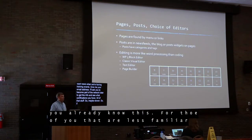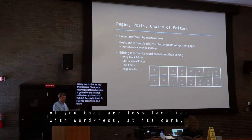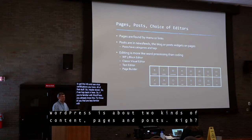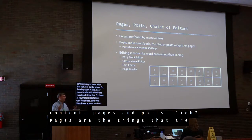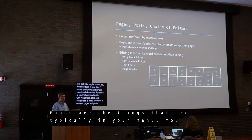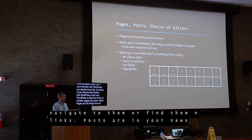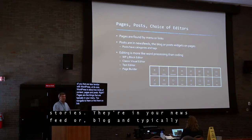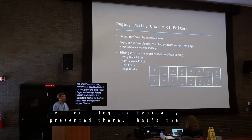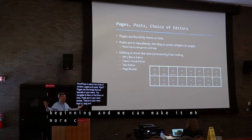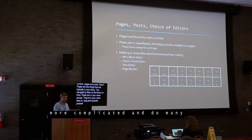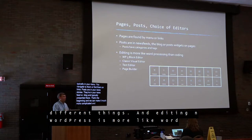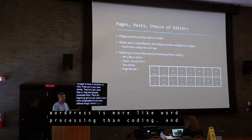If you're familiar with WordPress, you already know this. At its core, WordPress is about two kinds of content: pages and posts. Pages are the things typically in your menu — you navigate to them or find them from links. Posts are your news stories, in your news feed or blog. From there we can certainly make it much more complicated. Editing in WordPress is more like word processing than coding, but the world keeps changing and we have more options now.